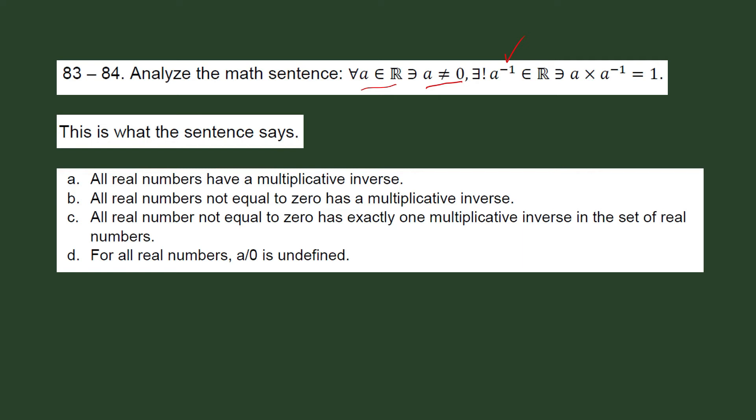All real number not equal to zero has exactly one multiplicative inverse in the set of real numbers. Well, it sounds like the sentence in letter B. For all real numbers, A divided by zero is undefined. So which do you think is the right choice? What is this math sentence saying?